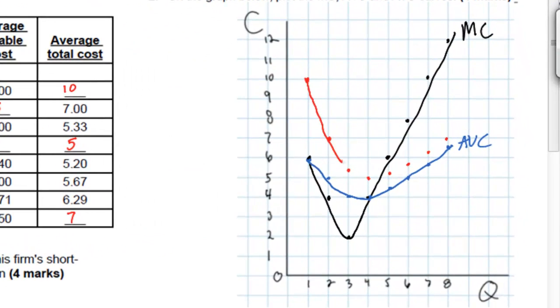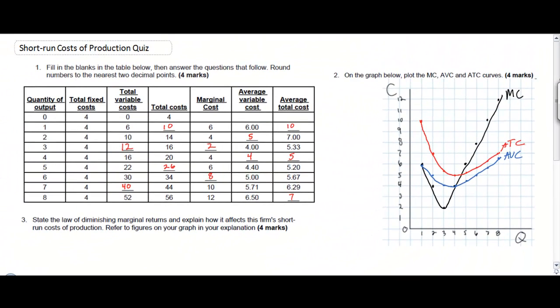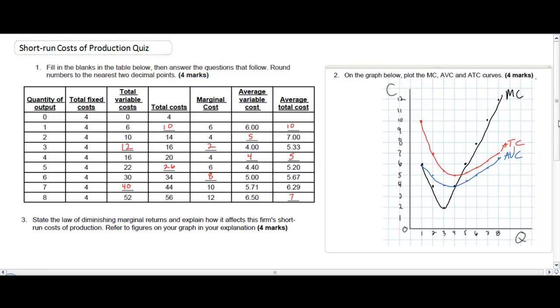Finally we're drawing our average total cost curve which includes, takes into account, the average fixed costs. ATC also slopes downwards until it hits the marginal cost curve then it slopes upwards.